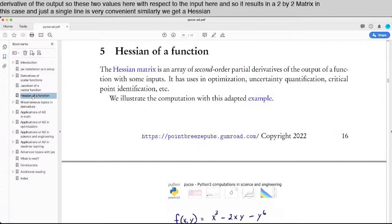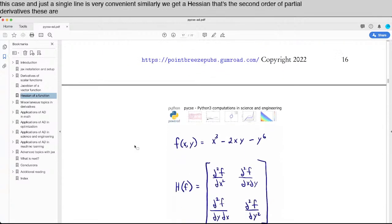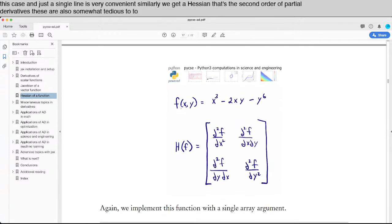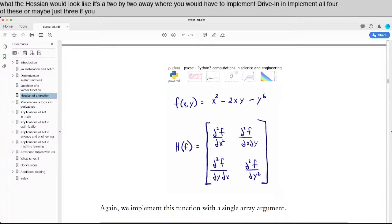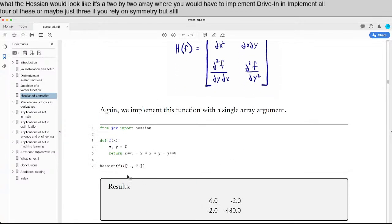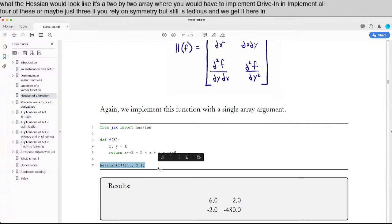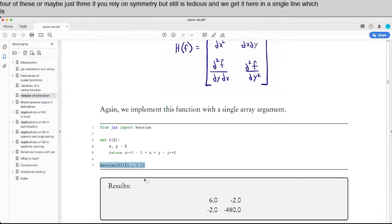Similarly, we get a Hessian, that's the second order partial derivatives. These are also somewhat tedious to work out. So if we have a function of two variables here, this is what the Hessian would look like. It's a two by two array where you would have to implement, derive and implement all four of these, or maybe just three if you rely on symmetry. But still, it's tedious. And we get it here in a single line, which is really convenient.